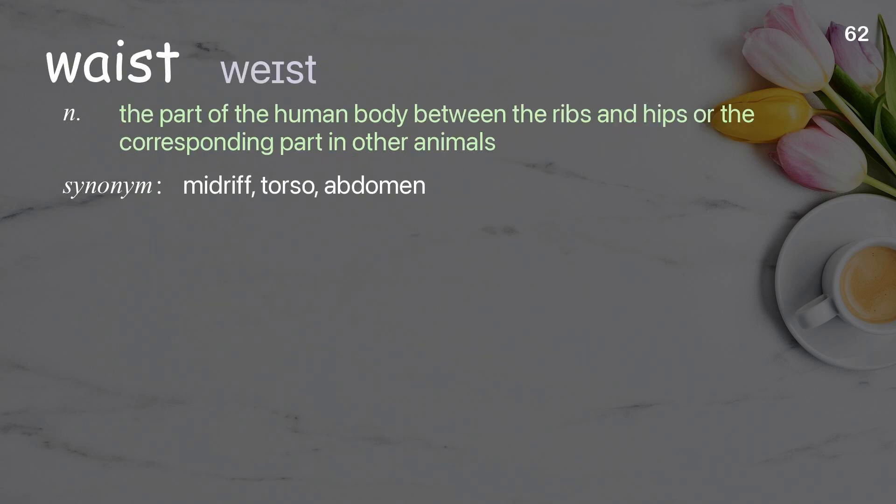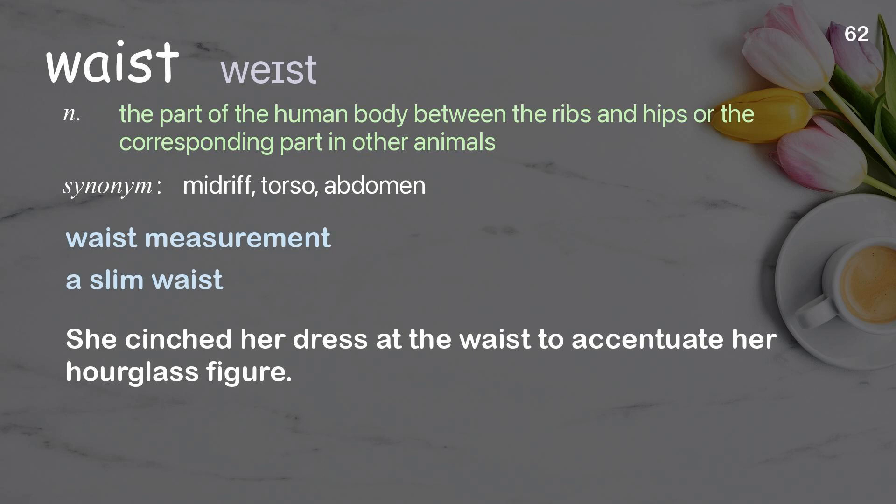Waist. The part of the human body between the ribs and hips, or the corresponding part in other animals. Examples: waist measurement, a slim waist. She cinched her dress at the waist to accentuate her hourglass figure.